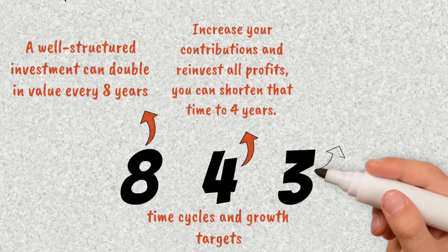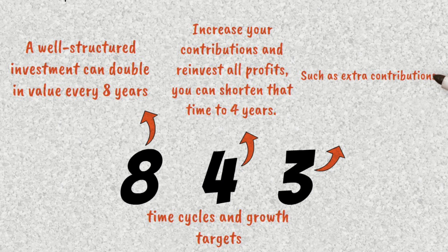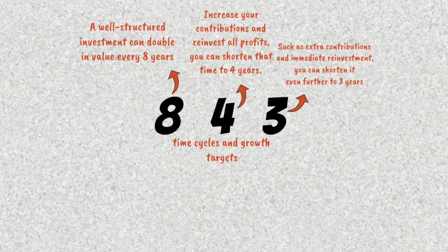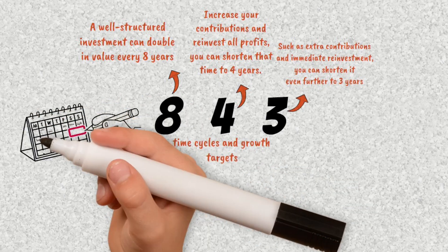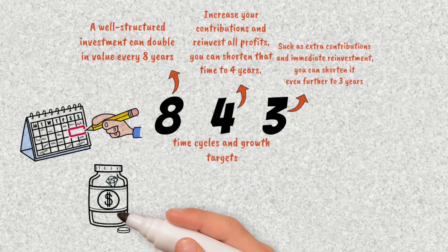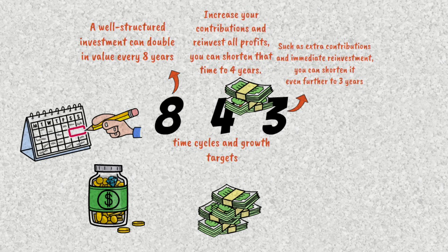Think of it like this: In the 8-year scenario, you let the money work on its own with no significant additional contributions. In the 4-year scenario, you commit to investing more each month and reinvesting all interest and dividends. In the 3-year scenario, you combine extreme discipline with investment choices that have greater potential and consistency, keeping an absolute focus on reinvesting everything.